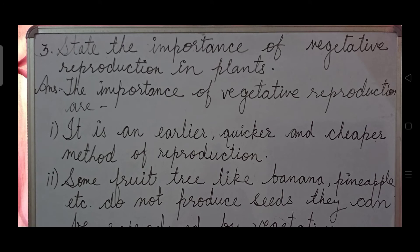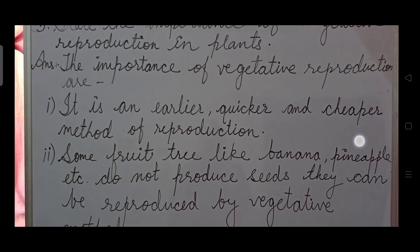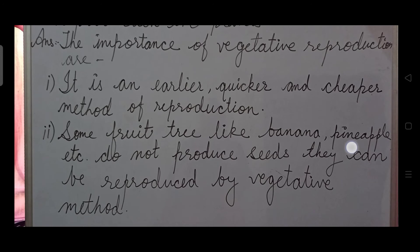Question number three: state the importance of vegetative reproduction in plants. Answer: It is an easier, quicker, and cheaper method of reproduction. Some fruit trees like banana and pineapple do not produce seeds and they can be produced by vegetative propagation.